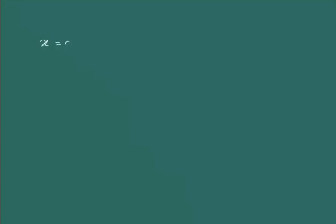Let us take one vibration given by x = 0 and y = a·cos(ωt), where ω is the angular frequency, so the frequency of vibration is ω/2π. Since x is 0 and y is a·cos(ωt), it is a sinusoidal vibration — a linear vibration because it is only vibrating along the y-axis.